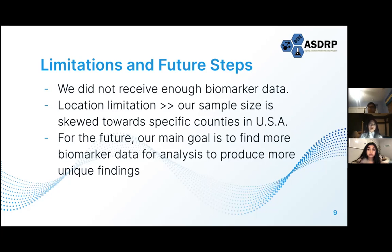There is also the limitation of location. A lot of our data was specific to certain counties of the United States, which made the demographics somewhat skewed. For instance, two of our data sets came from California's Bay Area region, where the demographics are very different from the rest of the country. This may have caused a skew towards Hispanics appearing more prone to contracting COVID-19, because the Hispanic population in the Bay Area is higher relative to the rest of the country.